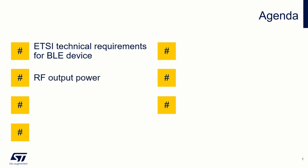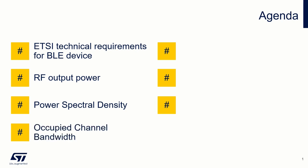It is the RF output power of the signal, power spectral density — which is the power distributed over a unit of frequency band — and furthermore, the occupied channel bandwidth, which indicates whether the signal remains in the reserved band.